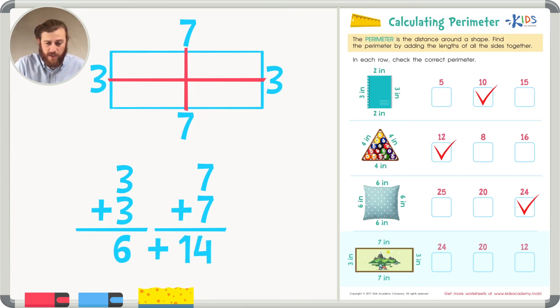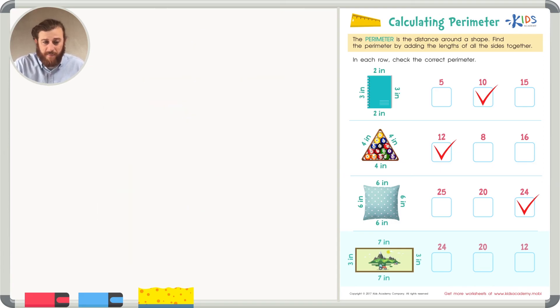Now we can just add six plus fourteen. Fourteen, fifteen, sixteen, seventeen, eighteen, nineteen, twenty, to give us a perimeter of twenty. Believe it or not, in this problem, there's another easy way you could have solved for the perimeter. Let's look again.